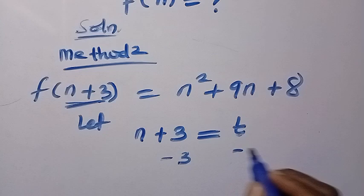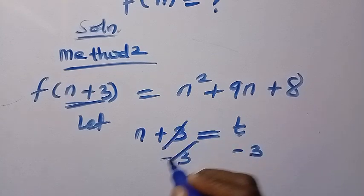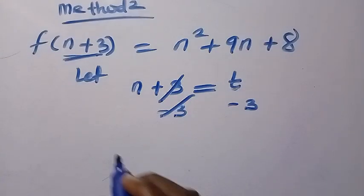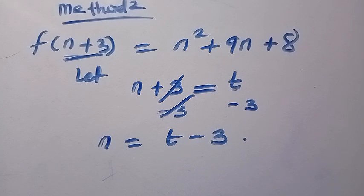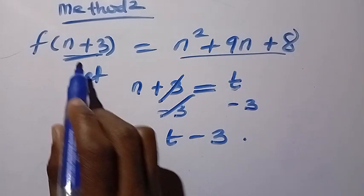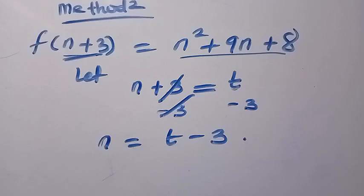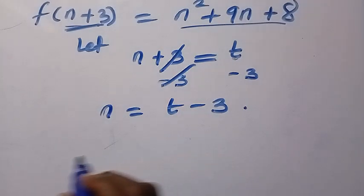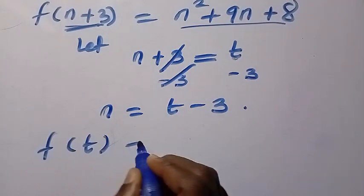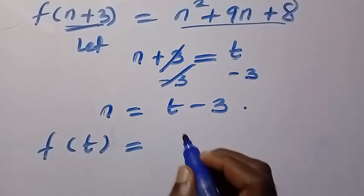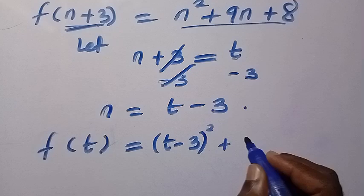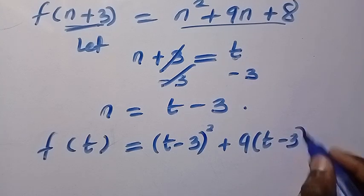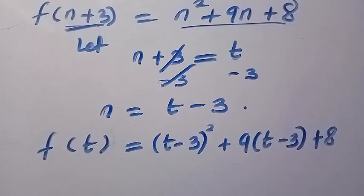Let's subtract 3 from both sides: 3 cancels 3, and we get n equals t minus 3. After getting this, let's replace everything by substituting n equals t minus 3 into the original equation. So f of t equals the quantity t minus 3 squared, plus 9 times the quantity t minus 3, plus 8.